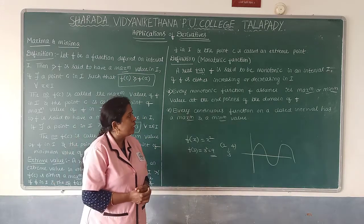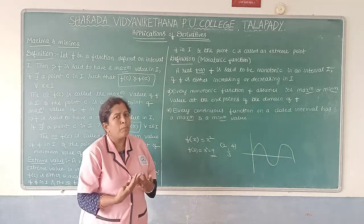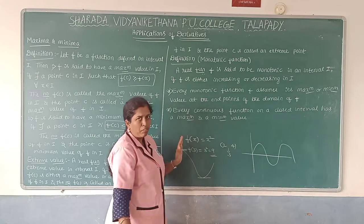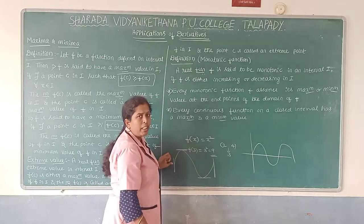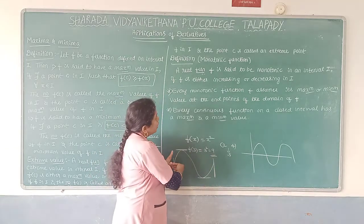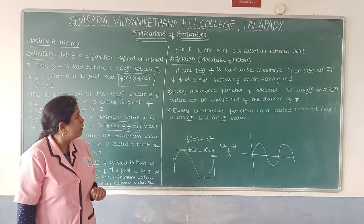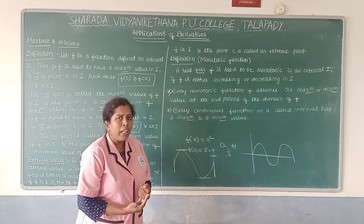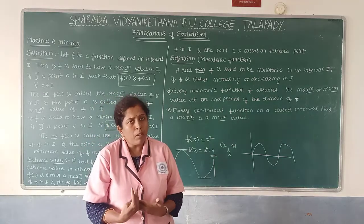Every monotonic function assumes its maximum or minimum value at the end points of the domain of F. For example, in a monotonic function, the minimum or maximum occurs at the end points of the domain. Also, every continuous function on a closed interval [a, b] has both a maximum and a minimum value.